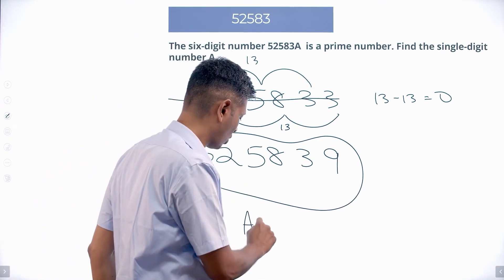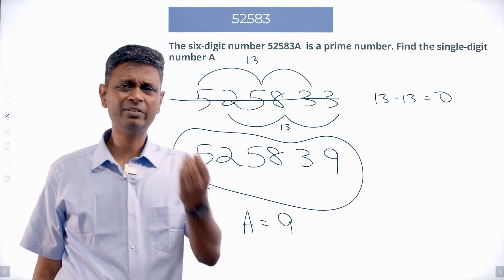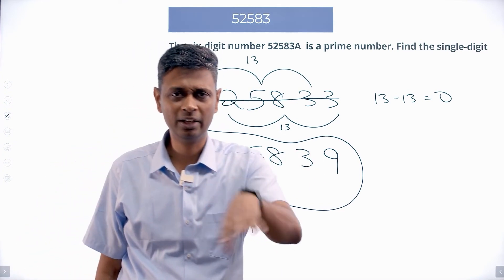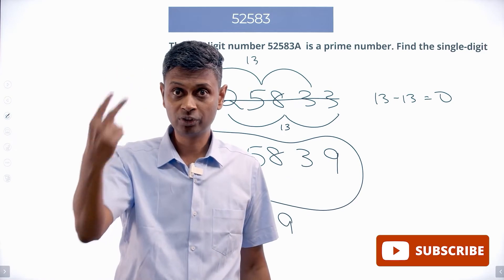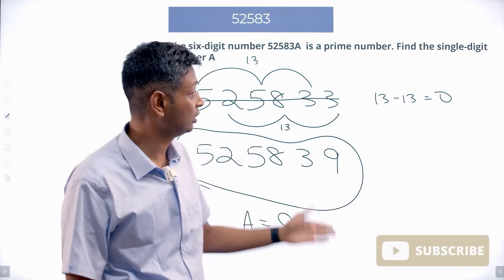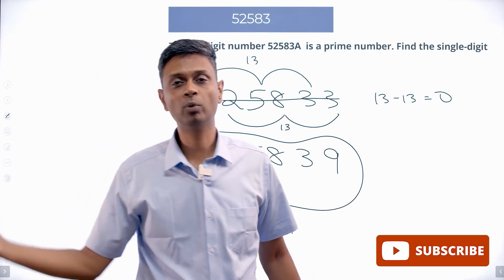This number will have to be prime. That's what the question is clearly saying. So my answer, A is 9. All I do is eliminate even numbers, eliminate multiples of 5, eliminate multiples of 3. I am left with only two possibilities. Out of two, luckily for us, this number is a multiple of 11. Game over, done!